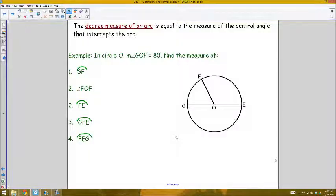There are two ways to measure arcs on a circle. One is arc length and one is the degree measure of an arc. We'll talk about arc length in a later video, but for now the degree measure of an arc is equal to the measure of the central angle that intercepts that arc.